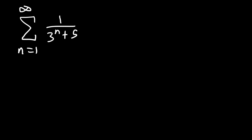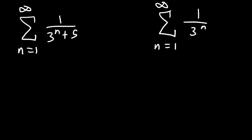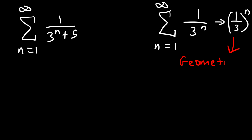Now let's work on the third example: the series 1 over 3 to the n plus 5. Will it converge or diverge? Since the 5 is insignificant when n is large, we compare it to 1 over 3 to the n. This is a geometric series with common ratio 1 over 3. Since the absolute value of the common ratio is less than 1, this geometric series is convergent.